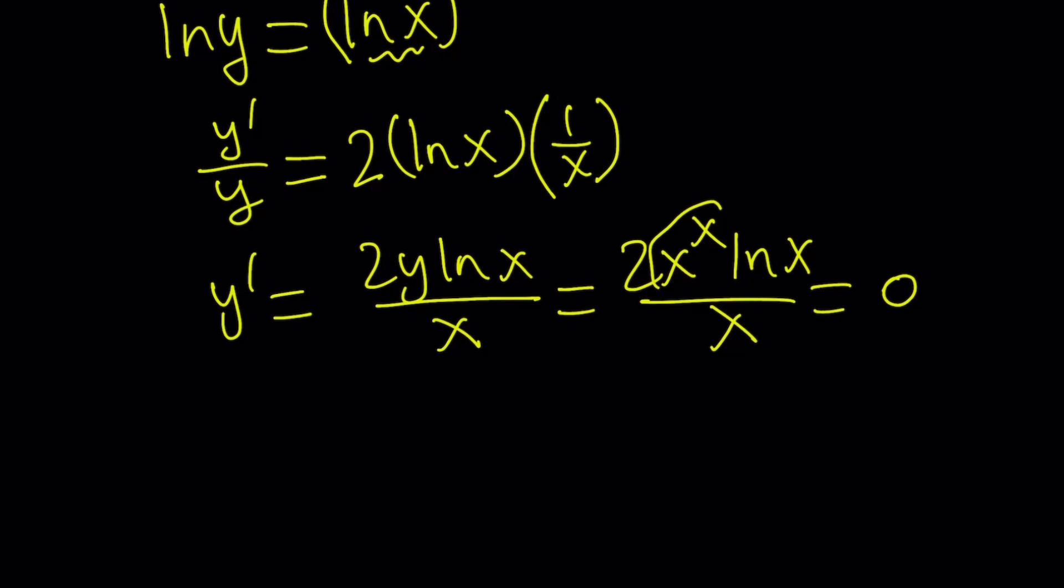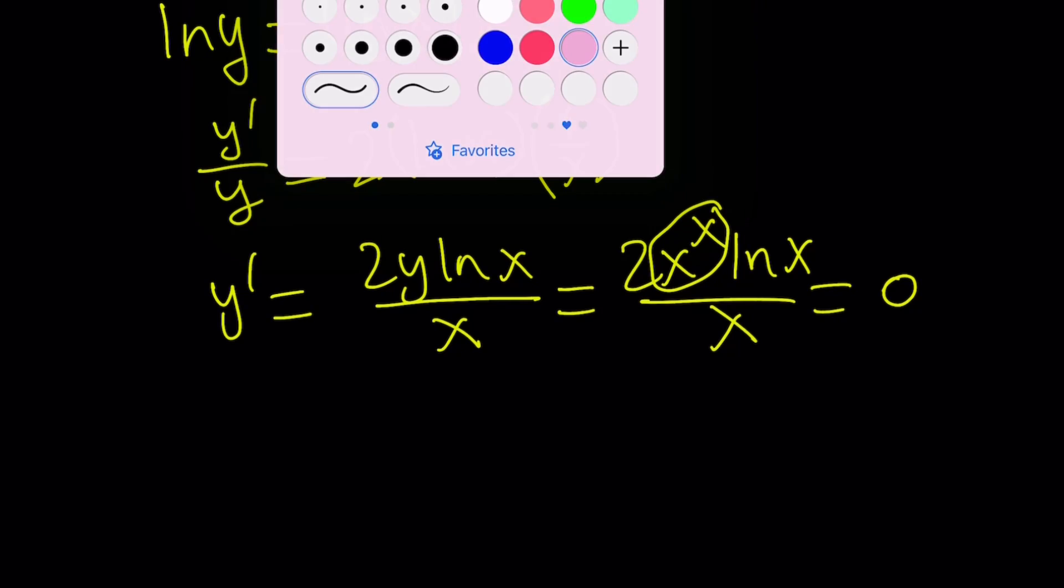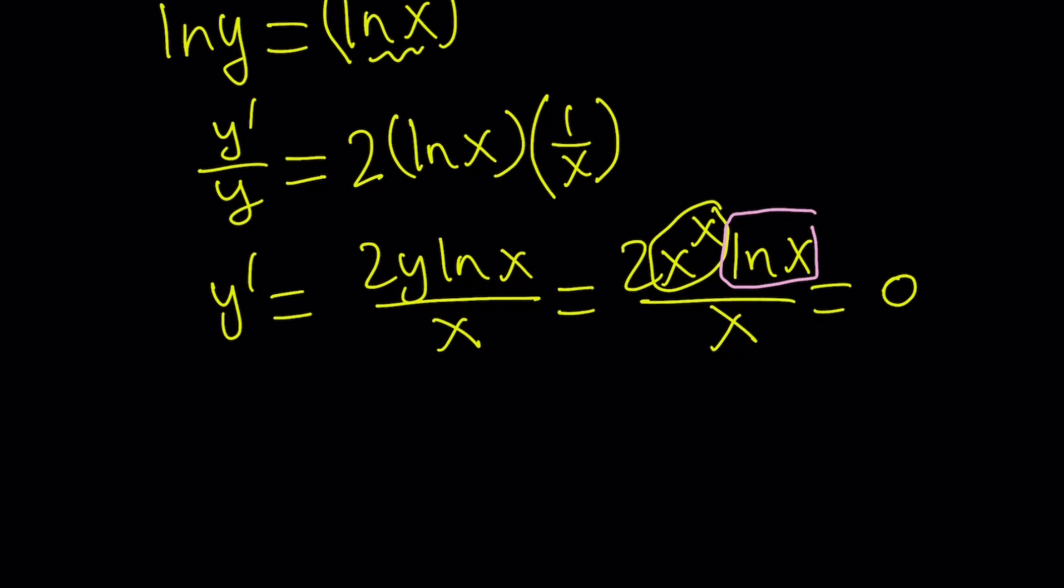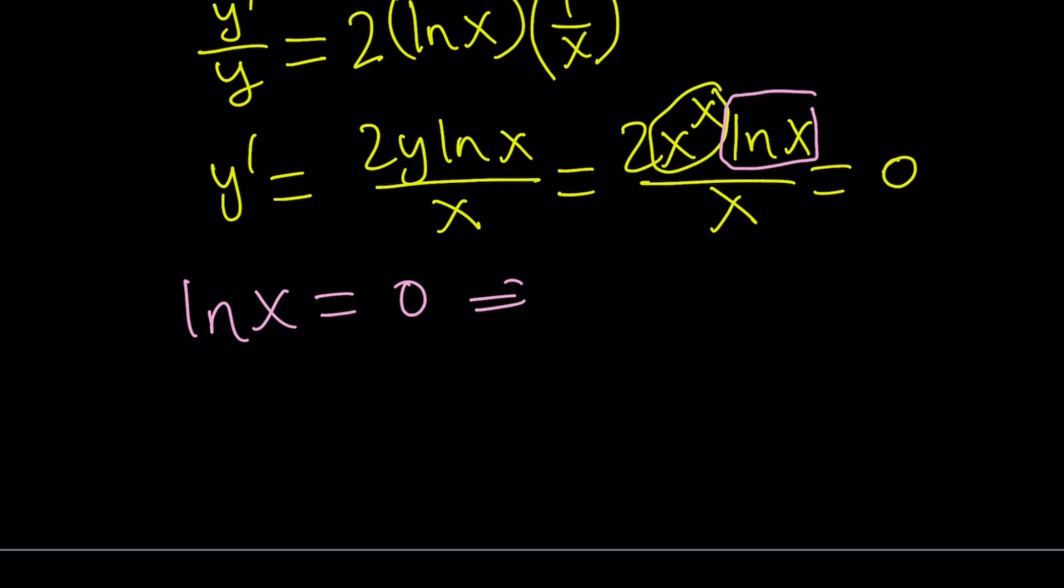Set this equal to 0. Y prime is 0. This can't be 0, right? As you know, x to the power x cannot be 0. And for reals. So, only ln x can be 0. That means x is equal to 1, right? So, from here, x equals 1.